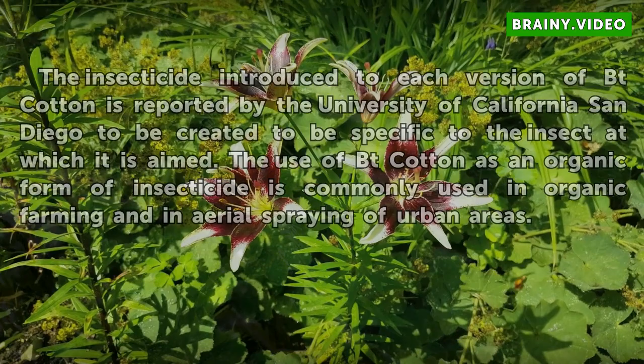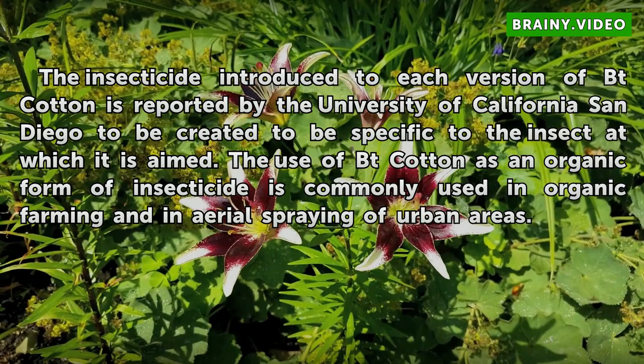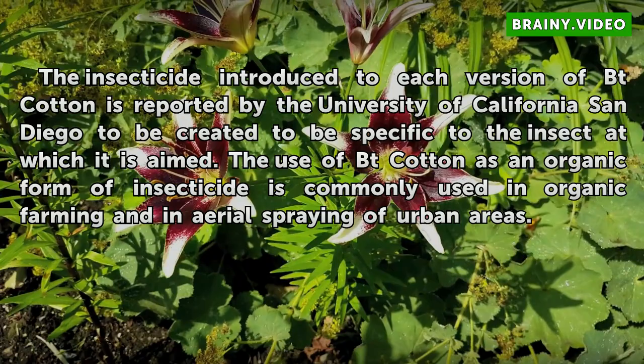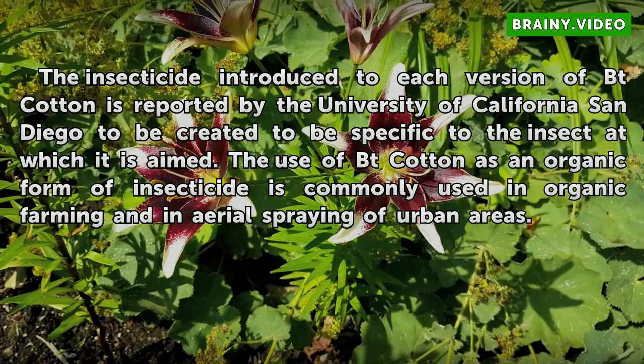Insecticide. The insecticide introduced to each version of Bt cotton is reported by the University of California San Diego to be created to be specific to the insect at which it is aimed. The use of Bt cotton as an organic form of insecticide is commonly used in organic farming and in aerial spraying of urban areas.